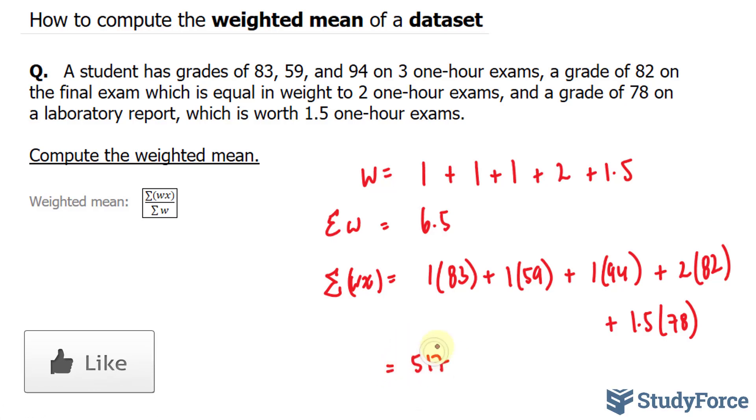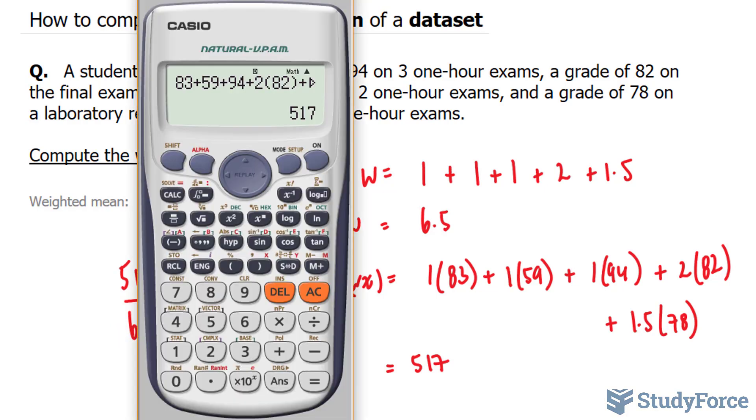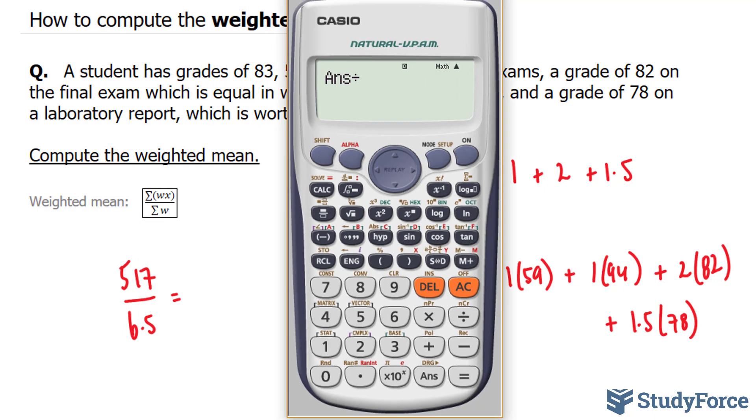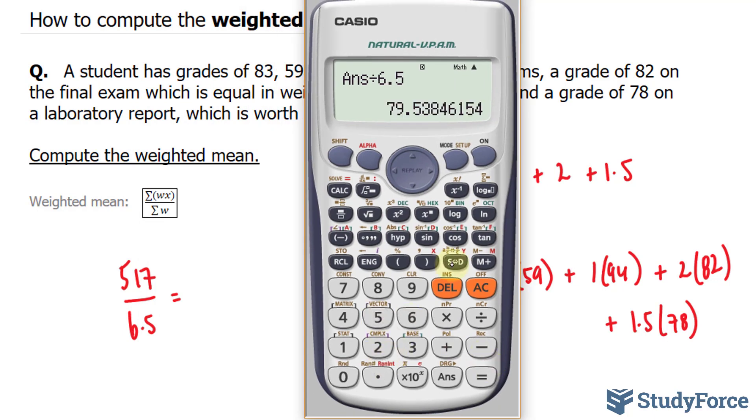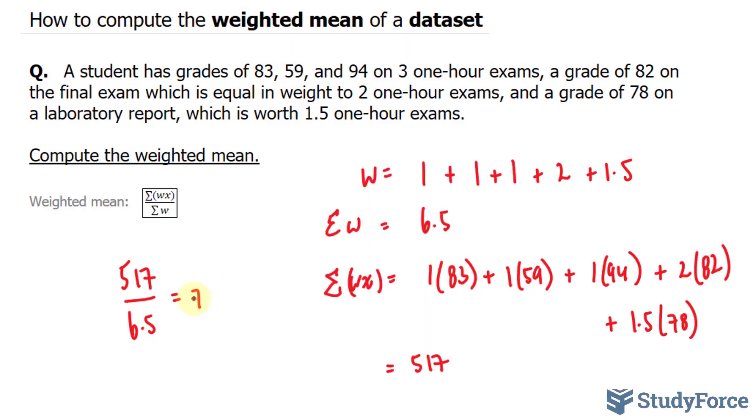My last step is to take this number and divide them. So 517 divided by 6.5. The weighted mean here is 79.58.